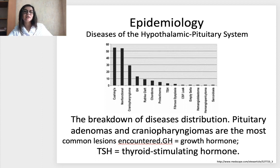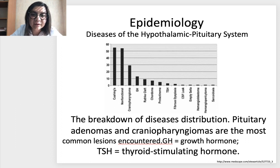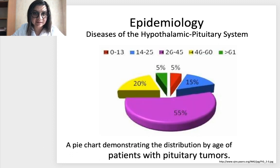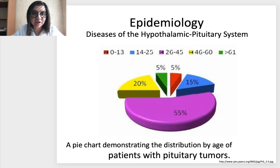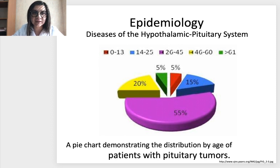The most common is pituitary adenoma syndrome; less common are non-functional disorders, and even less common are other hormone disorders, but you can meet them in real clinical practice. The age distribution shows that the most affected patients — more than half — are middle-aged, from 26 to 45. Less often, it is teenagers after 14 and patients up to 16. Children and very aged patients suffer from this type of disorder much more rarely.